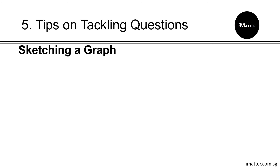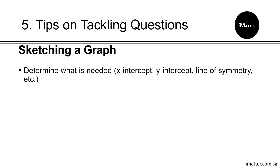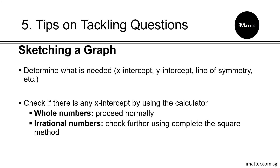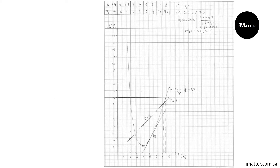Here are some tips when tackling functions and graphs questions. While sketching a graph, first determine what is needed — x-intercepts, y-intercepts, line of symmetry, or maximum/minimum point. Second, check if there is any x-intercept using your calculator. If it shows whole numbers, proceed normally. If it shows irrational numbers, check further using the complete the square method. Next is to plot your graph — practice many questions to be exposed to different types.